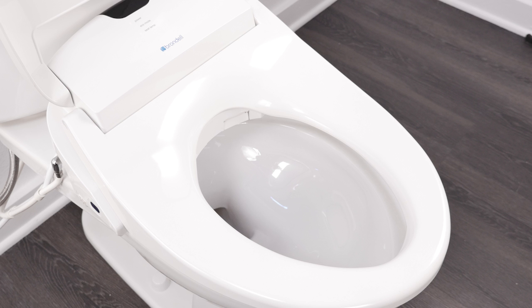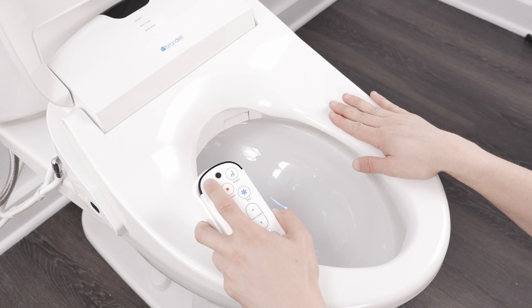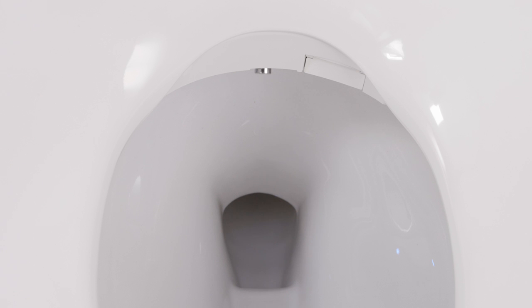If testing the swash bidet before first use, place the palm of your hand directly on the seat sensor and press the rear or front button on the remote control. Please be careful as water will spray out of the toilet bowl.